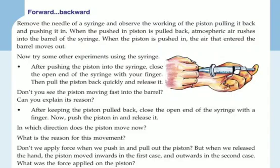The air rushes into the barrel through the open end of the syringe — since we removed the needle, it is open there. So when the piston is pulled back, the air is able to enter into the syringe. Now when the piston is pushed in, the air moves out through the open end of the syringe. This is how the piston works.